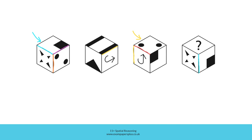That means when this figure is at the bottom of the cube, this is the one which will be at the top. In other words, when that figure is at the bottom of the cube, it will be this figure which appears at the top. Now all we need to do is work out the orientation of this figure and then look for it amongst the answer options. To help us do that, we can look at the shared edge between this figure and this one.